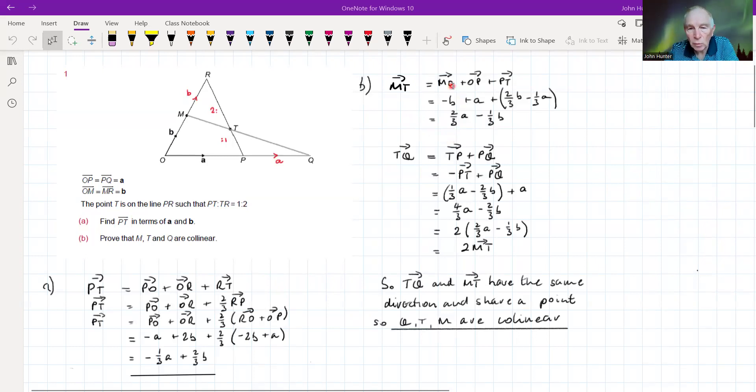And, well, we know all the bits of this, don't we? MO, well, we can just reverse the sign, and we get minus this B, MO, minus B. OP's A, and this PT is what we've just calculated down here, minus third A plus two thirds B, which I'll just kind of switch around there. Right, so then if we simplify that, we get this expression here, two thirds A minus one third B. So that's MT.